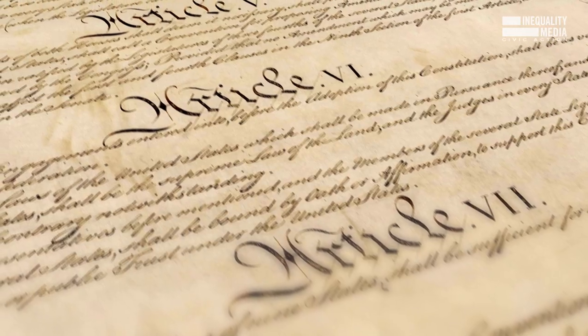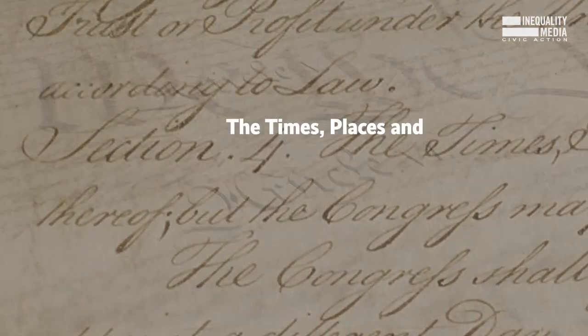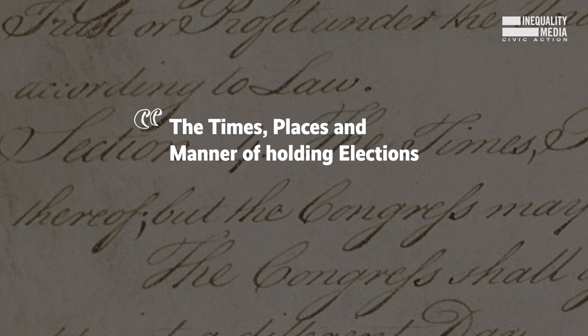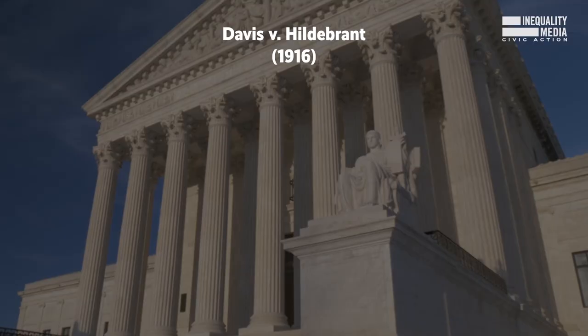The theory argues that the U.S. Constitution gives state legislatures alone the power to regulate federal elections in their states. Now, the Constitution does grant state legislatures the authority to prescribe the times, places, and manner of holding elections. But the U.S. Constitution does not give state legislatures total power over our democracy.